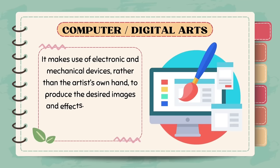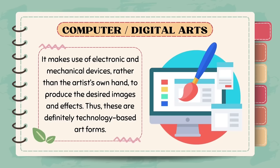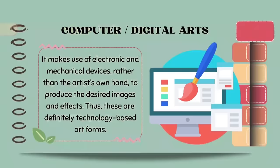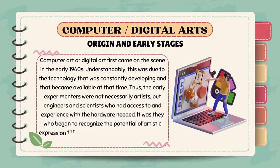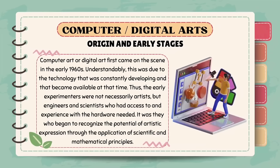Let's start with computer or digital arts. This makes use of electronic and mechanical devices rather than the artist's own hand to produce the desired images and effects. Computer art or digital art first came on the scene in the early 1960s, due to technology that was constantly developing. The early experimenters were not necessarily artists but engineers and scientists who began to recognize the potential of artistic expression through the application of scientific and mathematical principles. You will note a strong scientific or mathematical look and feel to the creations of many digital artists.